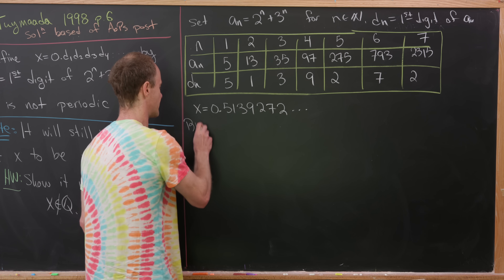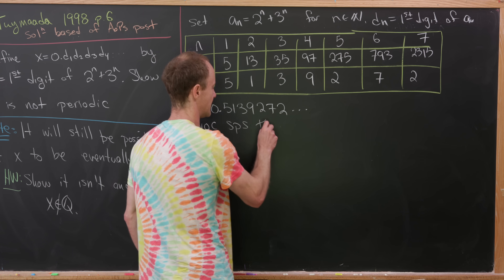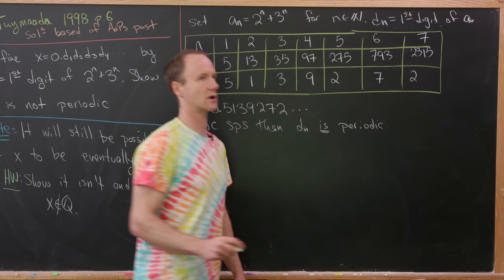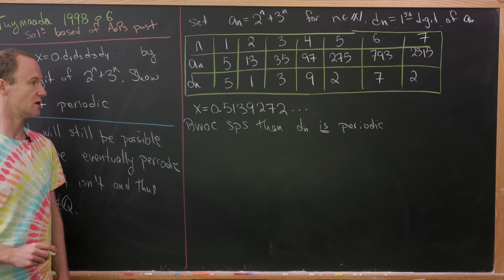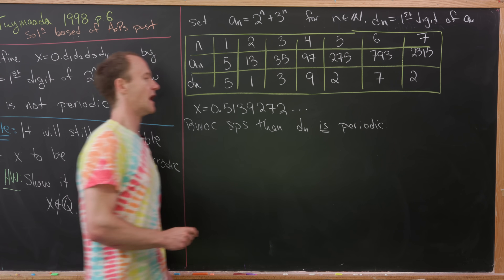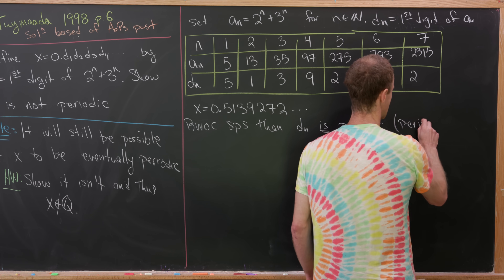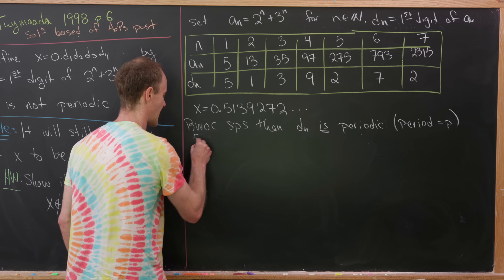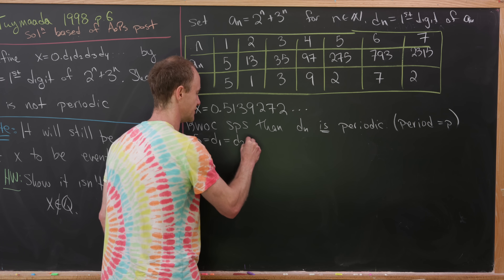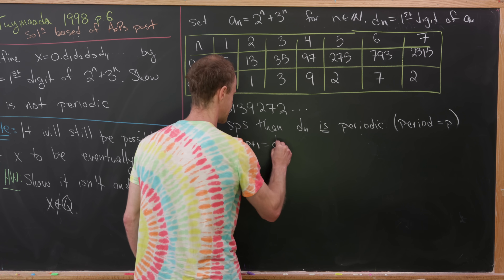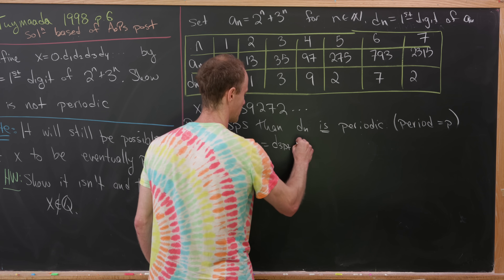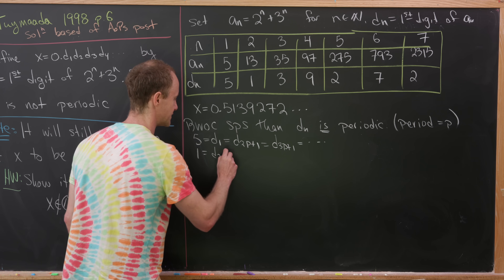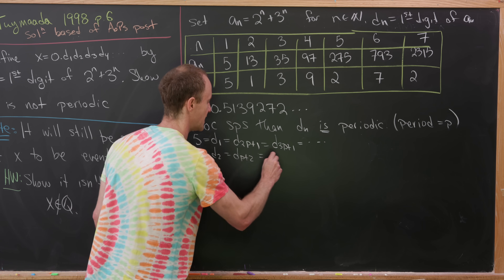By way of contradiction, suppose that d_n is periodic, and let's say the period is equal to a number p. This means that 5 = d_1 = d_{2p+1} = d_{3p+1} and so forth. Similarly, 1 = d_2 = d_{p+2} and so forth, and 3 = d_3 = d_{p+3} and so on.